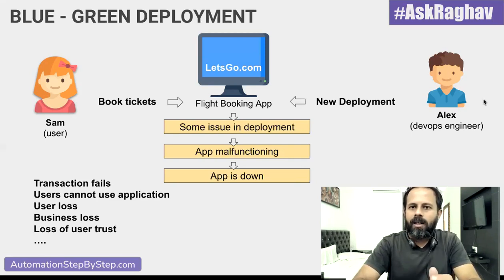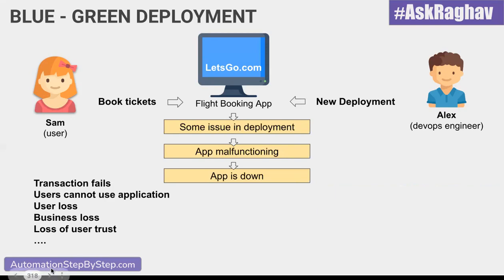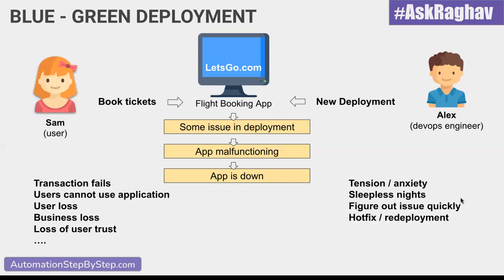On the developer or DevOps side, Alex will be having a lot of tension and anxiety. He will have sleepless nights — we don't know what the issue is. He will have to figure it out since the application cannot be down for a long time. The entire team will have to figure out the issues, do a hotfix and redeployment, and there will be so many other issues.